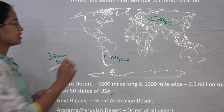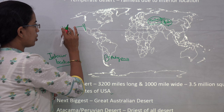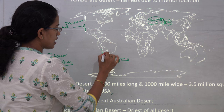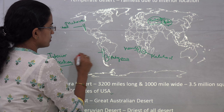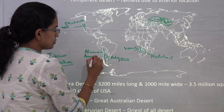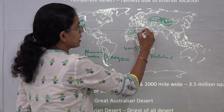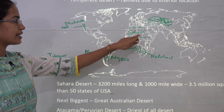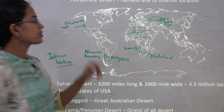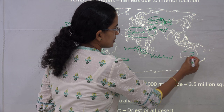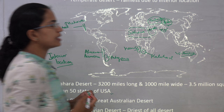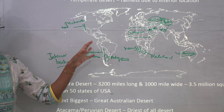Coming on to the hot deserts: you have the Mojave desert on the west coast of North America, then the Namib desert in Africa. After the Namib you have the Kalahari desert, then the Atacama desert in South America which is also known as the Peruvian desert. The most important and biggest desert of the world is the Sahara desert — so large that it is said to be bigger than South Africa and the combined 50 states of the USA. Then you have the Arab desert, the Thar desert in India, and finally the West Australian desert in Australia.